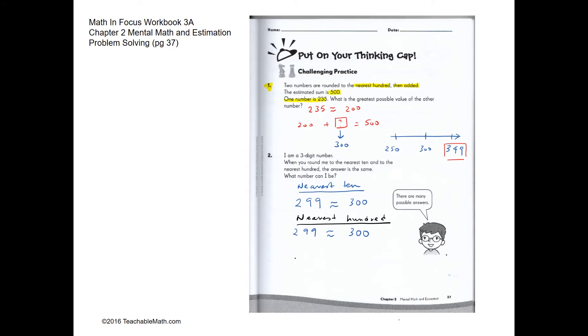So one number is 235. What is the greatest possible value of the other number? So 235 when you round to the nearest hundred is 200. So 200 plus a number gives you 500. So the number is 300.